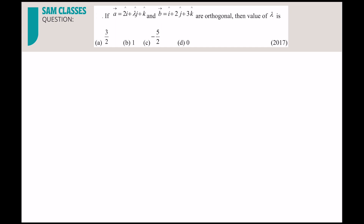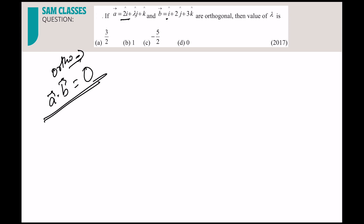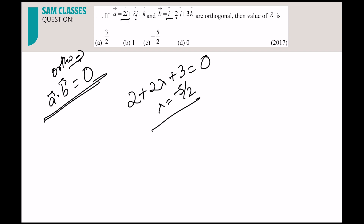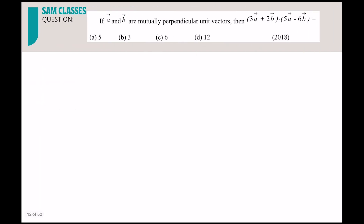If a = (2, λ, 2) and b = (1, 2, 1) are orthogonal, dot product = 0. So 2(1) + λ(2) + 2(1) = 0 gives 2 + 2λ + 3 = 0, so λ = −5/2.